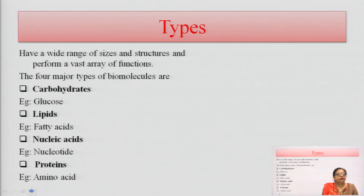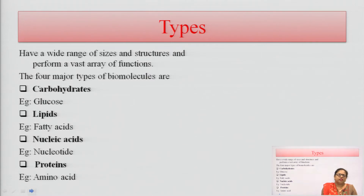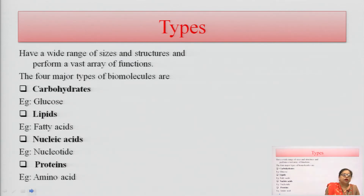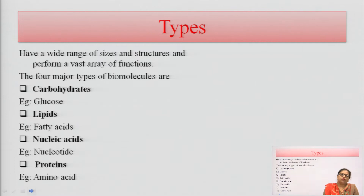There are four main types of biomolecules. The first is carbohydrate, whose basic structure is glucose or monosaccharides. The second is lipids, having fatty acids as the monomer unit; these fatty acids join together to form lipids. The third is nucleic acid — the genetic material used for the formation of genetic material in our living system. The fourth is protein, having amino acid as the monomer unit; amino acids are joined together to form proteins. Amino acid is the monomer unit of protein, and nucleotide is the monomer unit of nucleic acid.